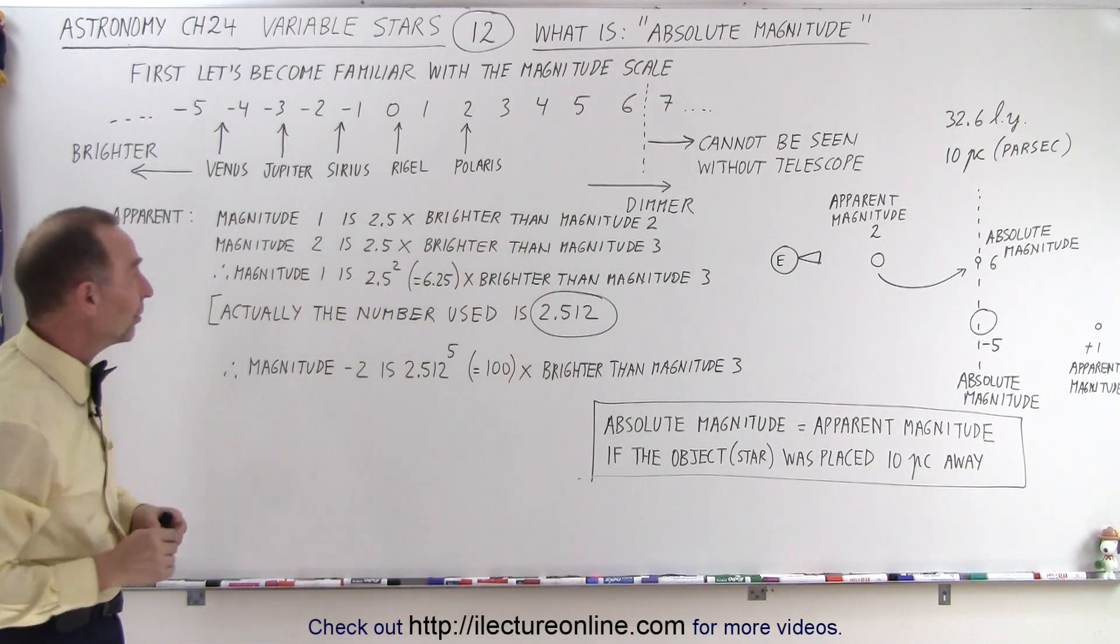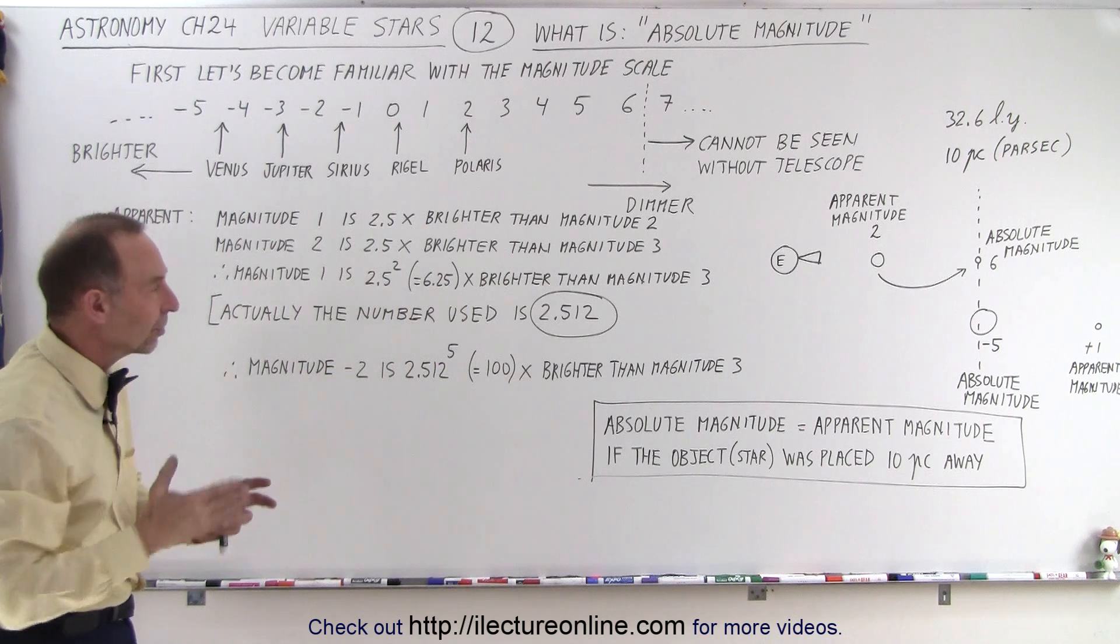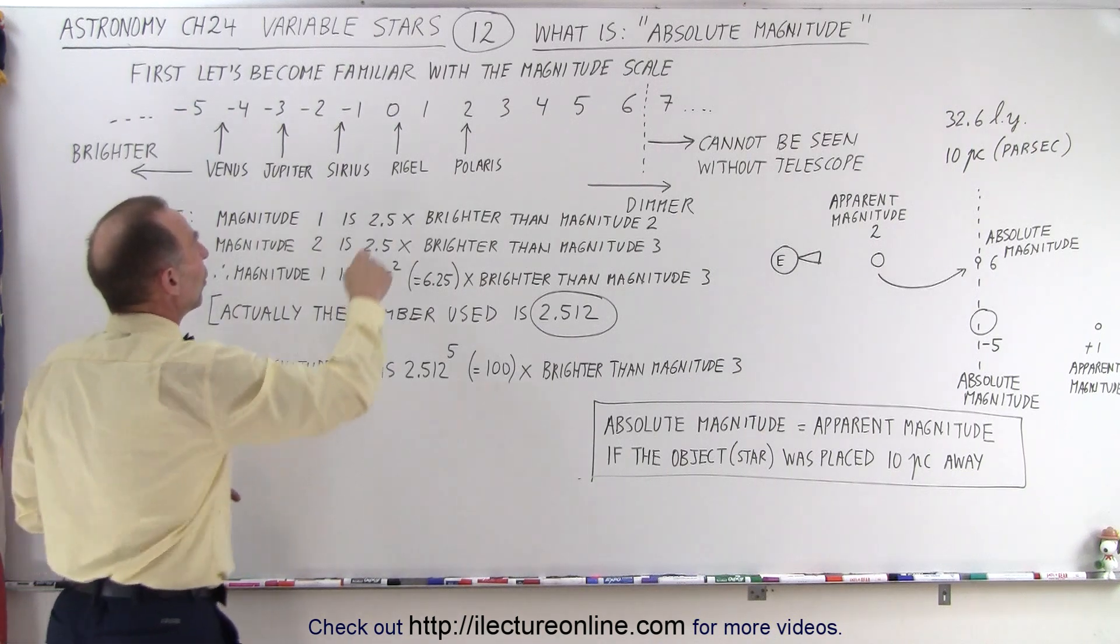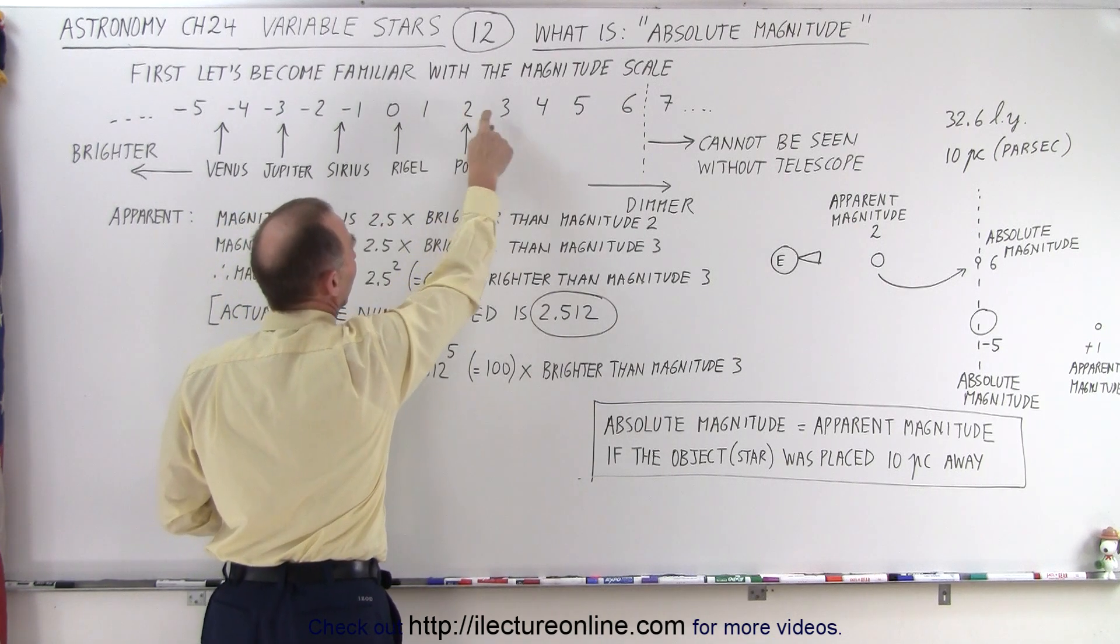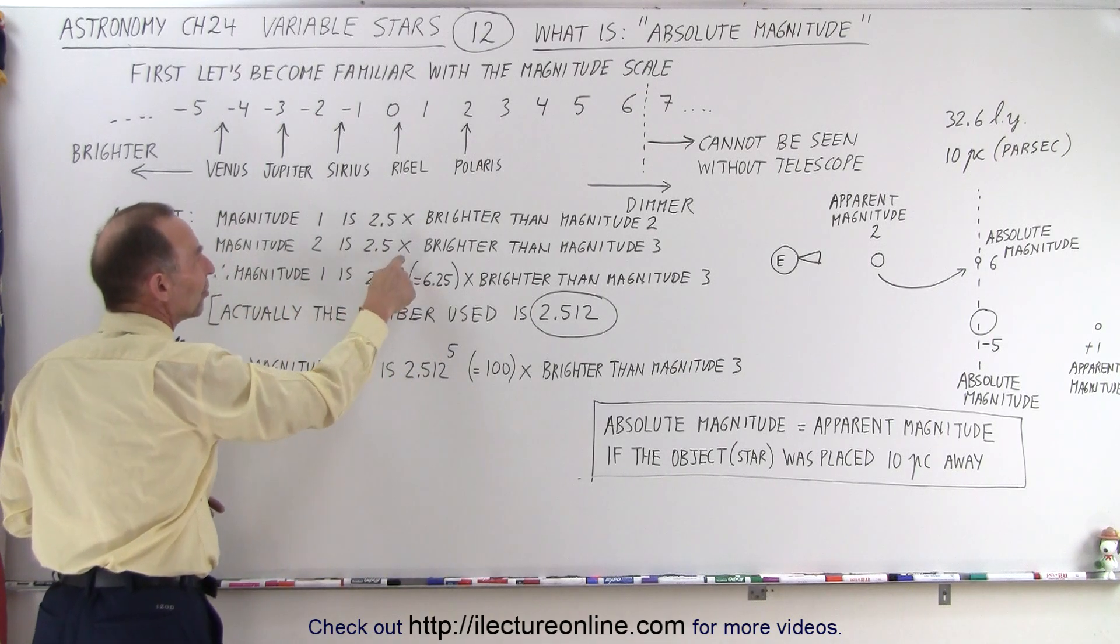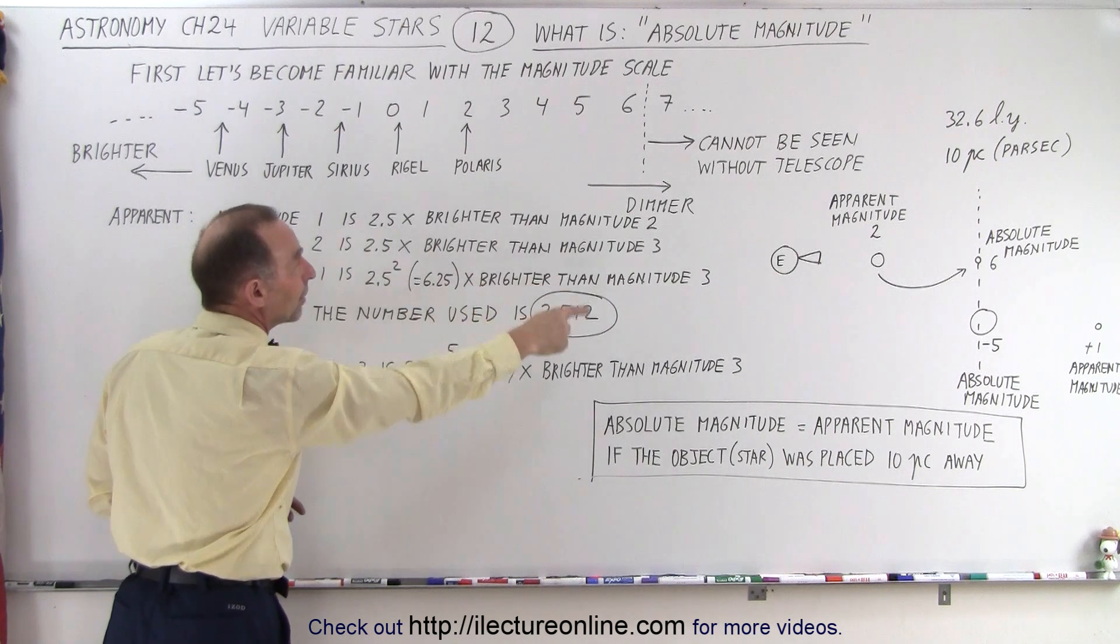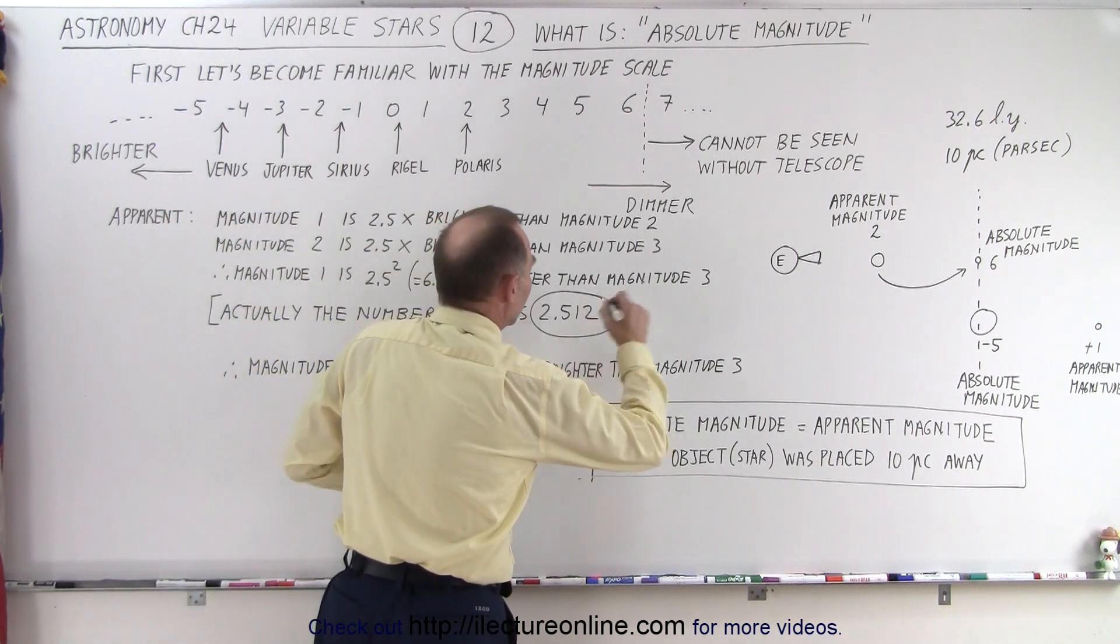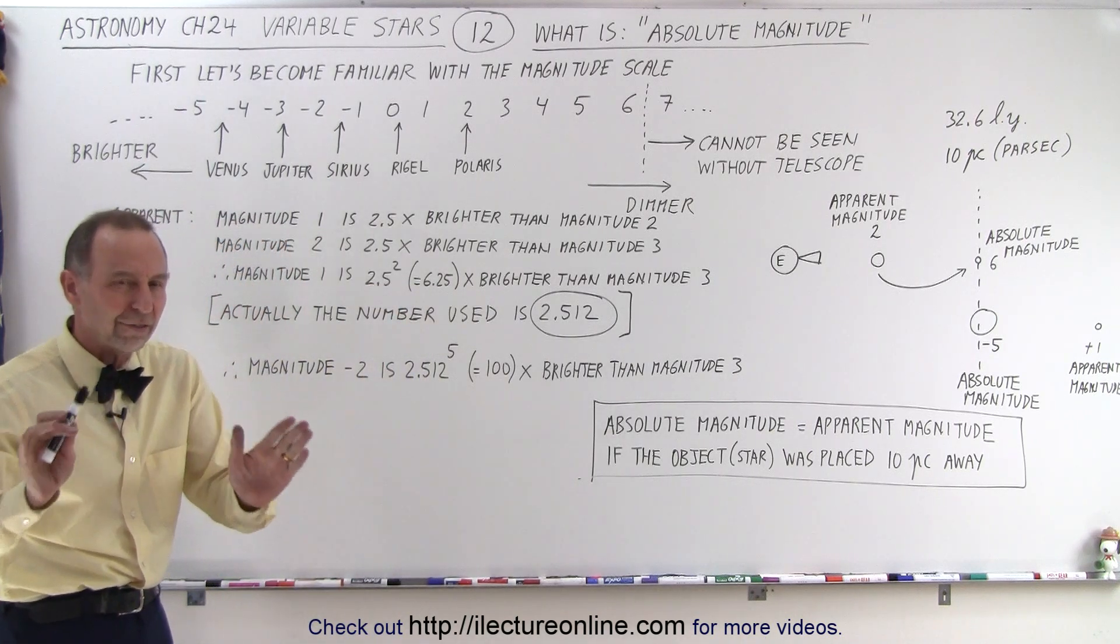Now as a comparison, a magnitude 1 object is two and a half times brighter than a magnitude 2 object, so that's what the scale is. Each number increases the brightness or decreases the brightness by a factor of 2.5. So a magnitude 1 is two and a half times brighter than magnitude 2. A magnitude 2 is two and a half times brighter than a magnitude 3. So therefore a magnitude 1 is 2.5 raised to the second power brighter, which is 2.5 squared, is 6.25, so 6.25 times brighter than a magnitude 3. The actual number used is actually 2.512, so if you have a calculator handy you actually want to put 2.512 there instead of 2.5. We just use 2.5 as an approximation.